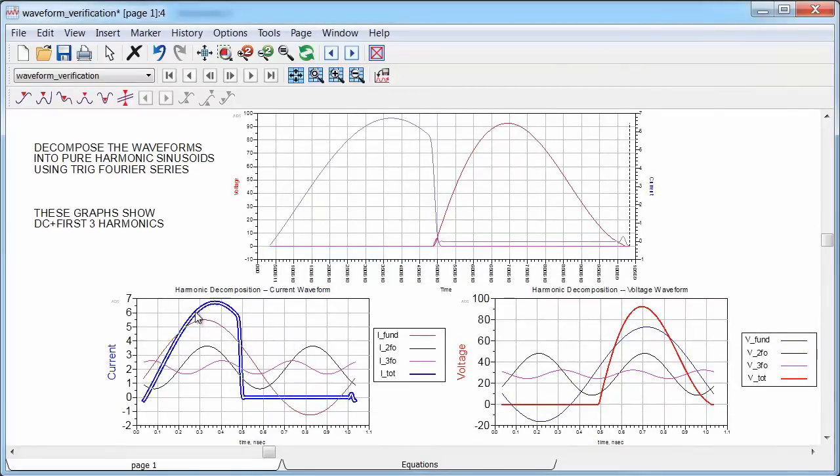So for example, here is the composite current waveform, which is the sum of the fundamental, the second harmonic, the third harmonic, and so on.